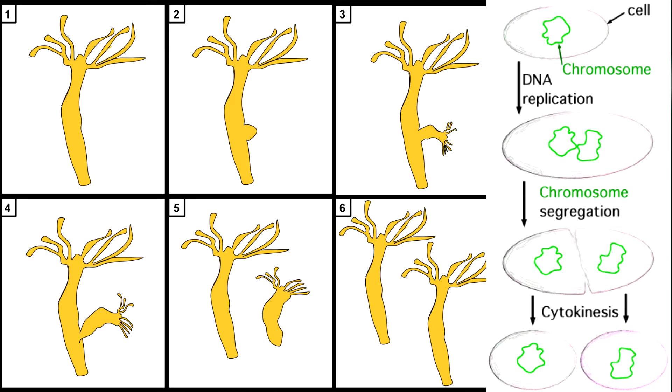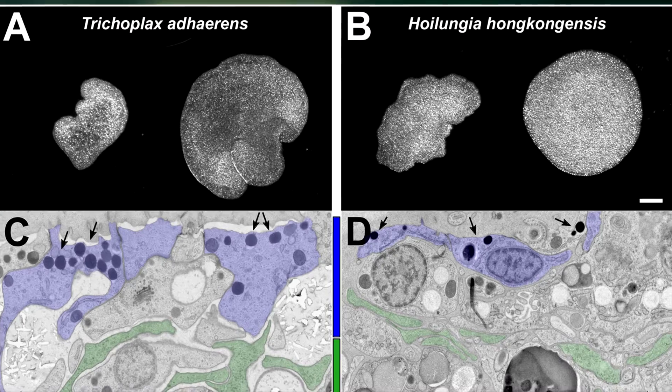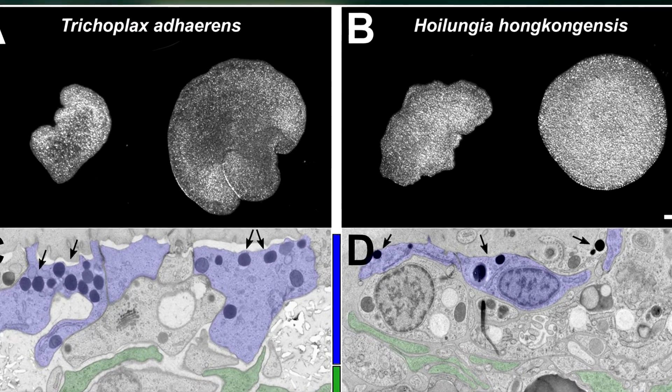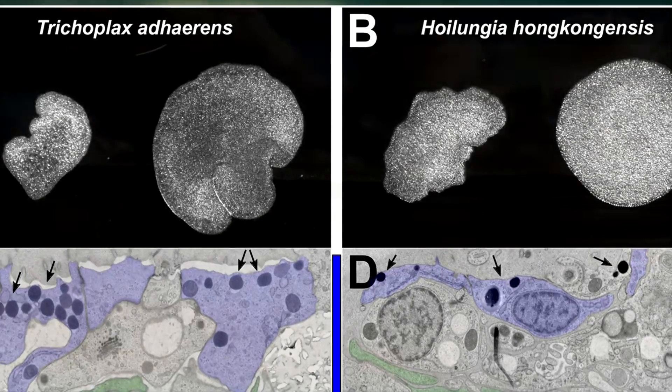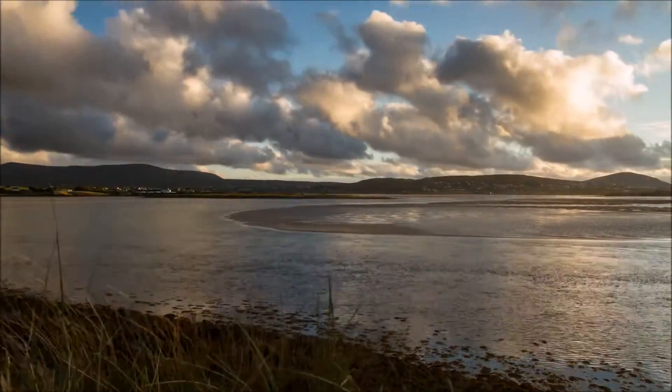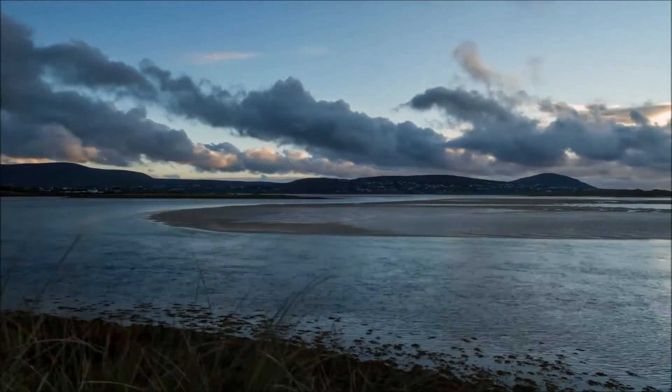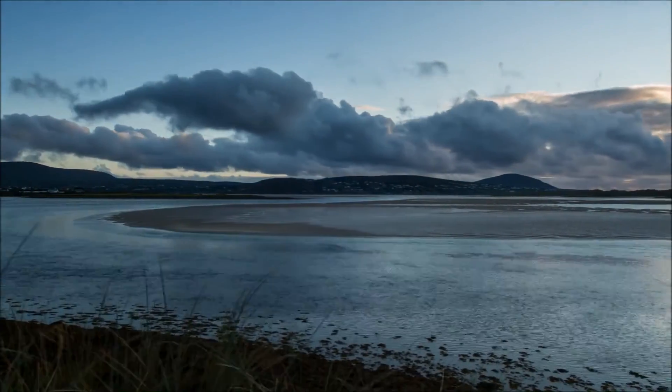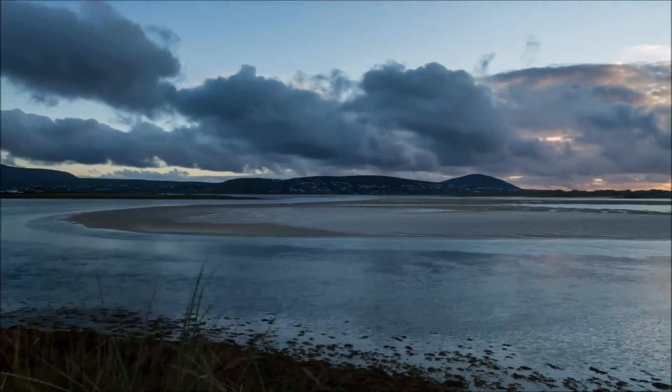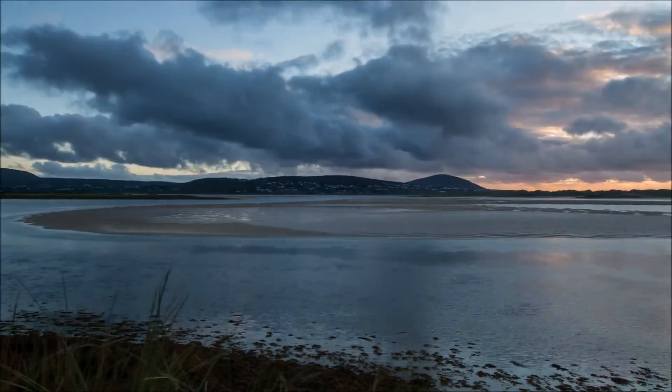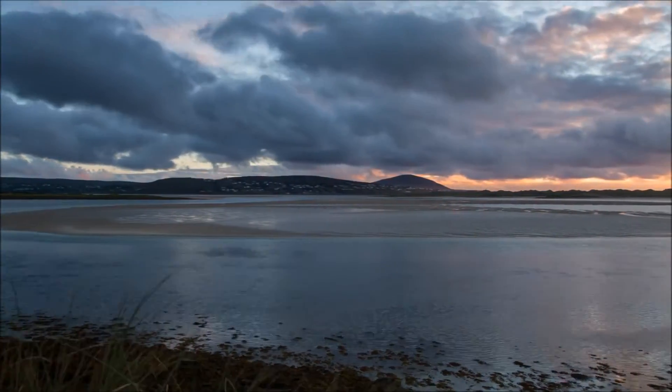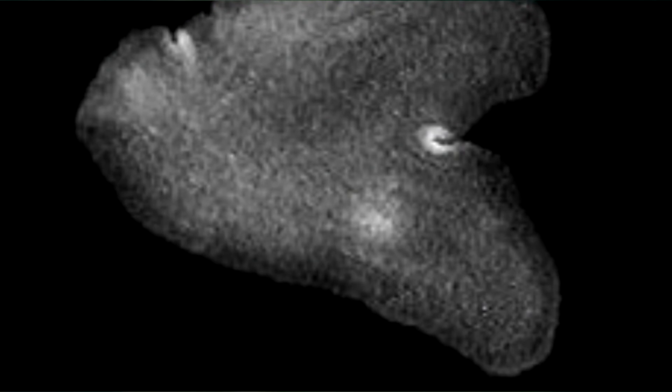Placozoa reproduce both asexually, or without a partner, via fission and budding, and sexually. Asexual reproduction is the more common method of reproduction in placozoa. Though sexual reproduction happens in warmer water that is densely populated with placozoa individuals. Scientists have never witnessed placozoa in the act of sexual reproduction, but it's known that they do it because evidence exists showing individuals with two separate parental genes.